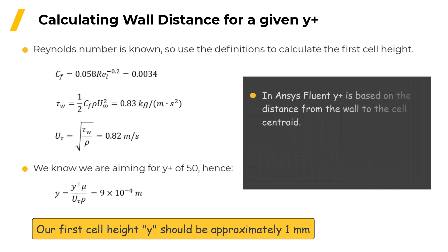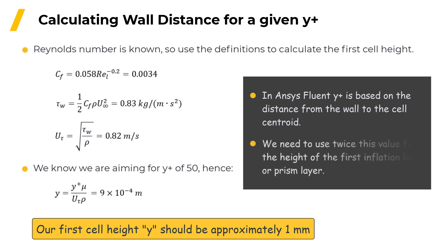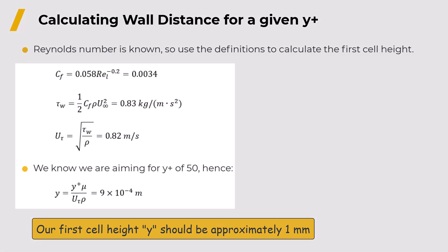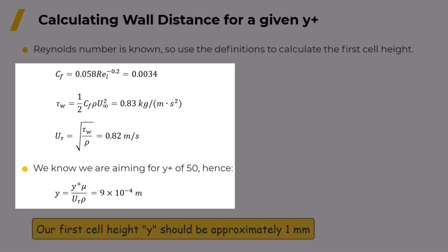In Fluent, Y-plus is based on the distance from the wall to the cell centroid, so if you're using ANSYS meshing or Fluent meshing, you would enter twice this value for the height of the first inflation layer or prism layer. Now unless you're literally solving for flow over a flat plate, the wall distance calculation we've just done here only provides an estimate, and the actual value of Y-plus will only be known when the solution is calculated.